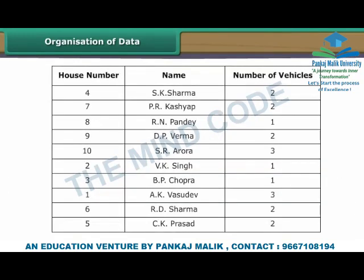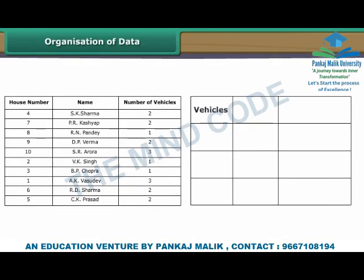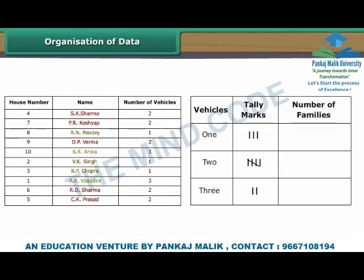Let us now organize the RWA data discussed in the beginning. Make three columns: vehicles, tally marks, and number of families. Specify one, two, and three under vehicles one by one. Under tally marks, denote families with a specific number of vehicles by tally marks against the appropriate options. Now count the tally marks against every option of vehicles and record it under number of families.